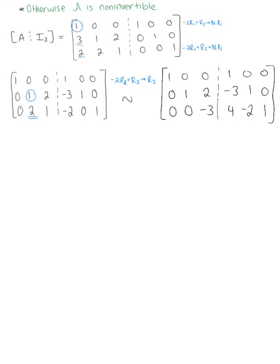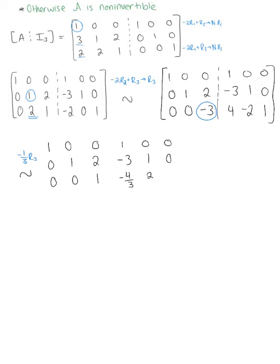Moving to the third pivot, we scale row 3 by −1/3 to make the pivot equal to 1. Row 1 remains: 1, 0, 0, 1, 0, 0. Row 2 remains: 0, 1, 2, −3, 1, 0. Row 3 becomes: 0, 0, 1, −4/3, 2/3, −1/3.